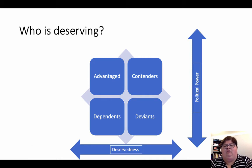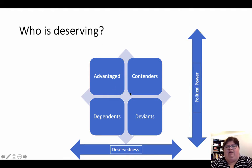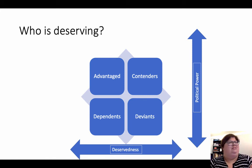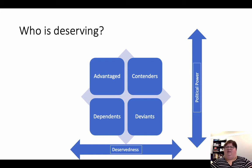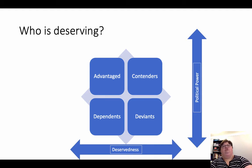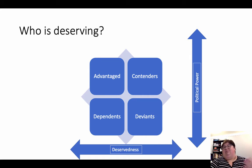There are two dynamics in this framework: how much someone deserves public policy attention, and how much political power that group has. Advantaged groups include scientists, business owners, senior citizens, middle-class taxpayers, and the military — the people you just can't insult and win an election. Advantaged groups tend to be targets for wide distribution of benefits; policymakers want to give a lot to advantaged groups because it goes in their favor politically. They also want to minimize the costs associated with those policies — sometimes by putting them on disfavored groups, and sometimes by hiding the costs altogether.